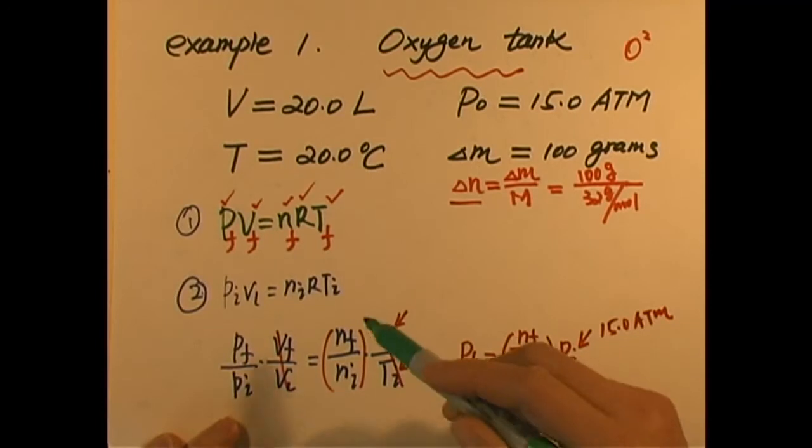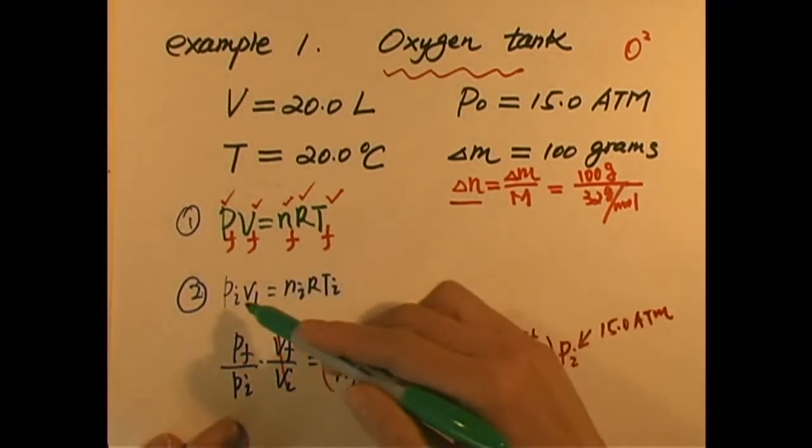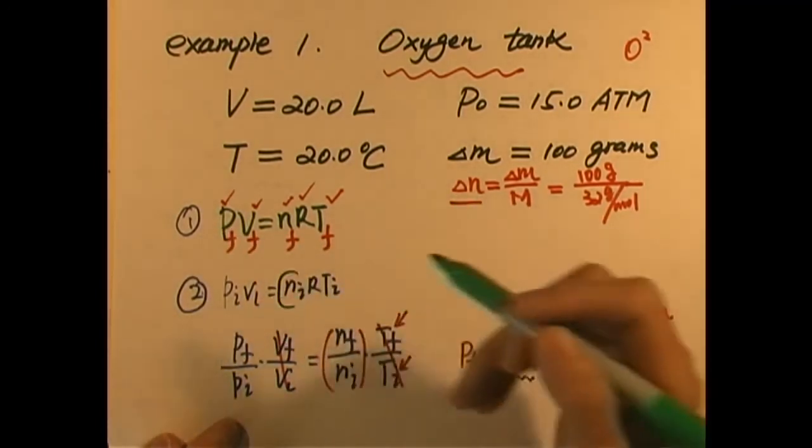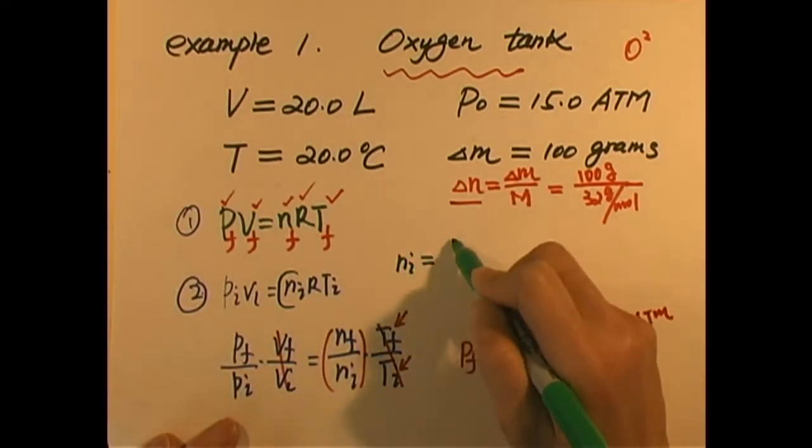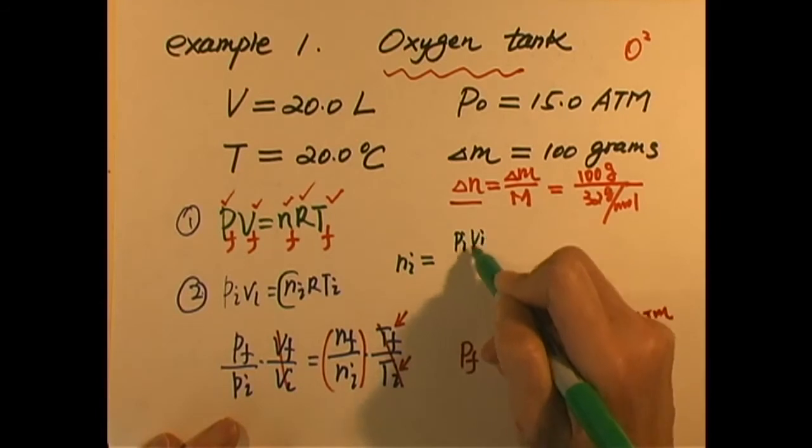P initial is 15.0 ATM. We can keep this ATM so we know, for example, if final is 14 ATMs, then we know it dropped 1 ATM. So the key now is we get this ratio. So we need to find what is the initial number of moles. Then we subtract the change, and we get final. So how do we do that? Now, if we look at this equation here, if we want to get n initial, n initial equals P initial V initial divided by R and T initial.